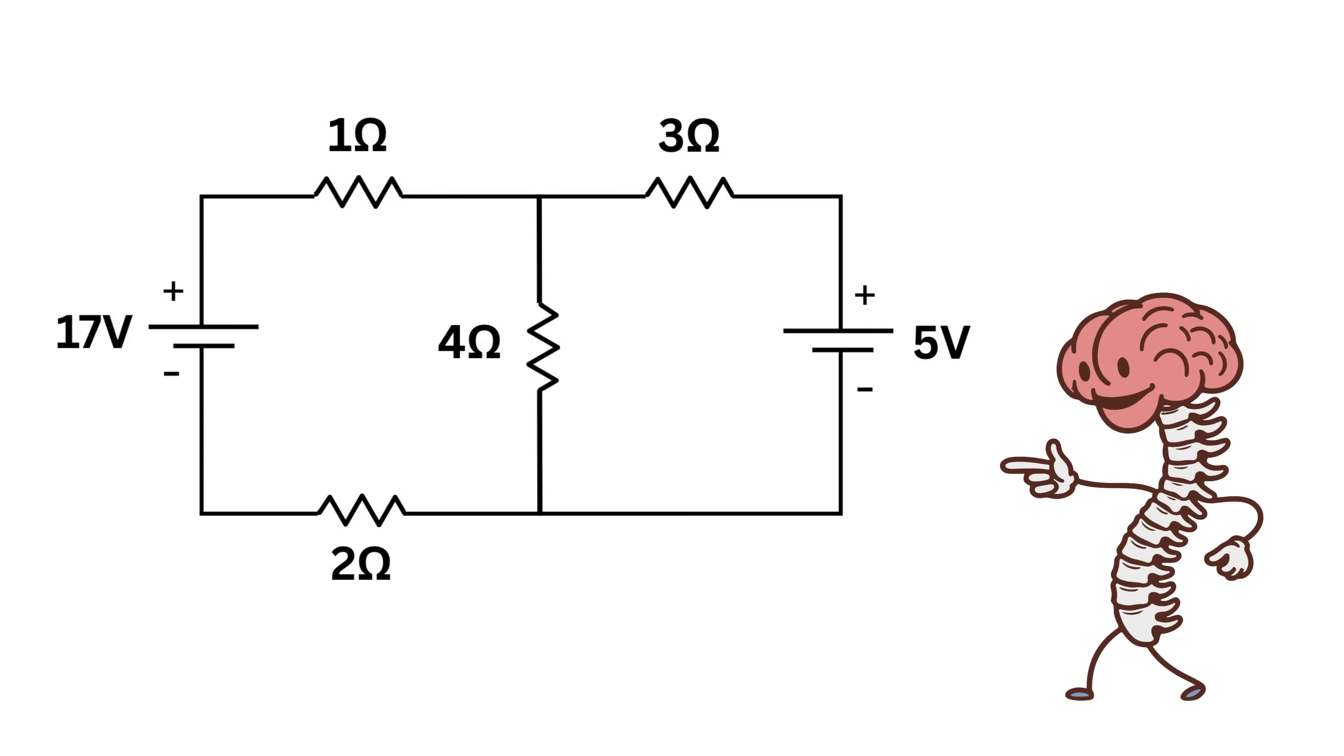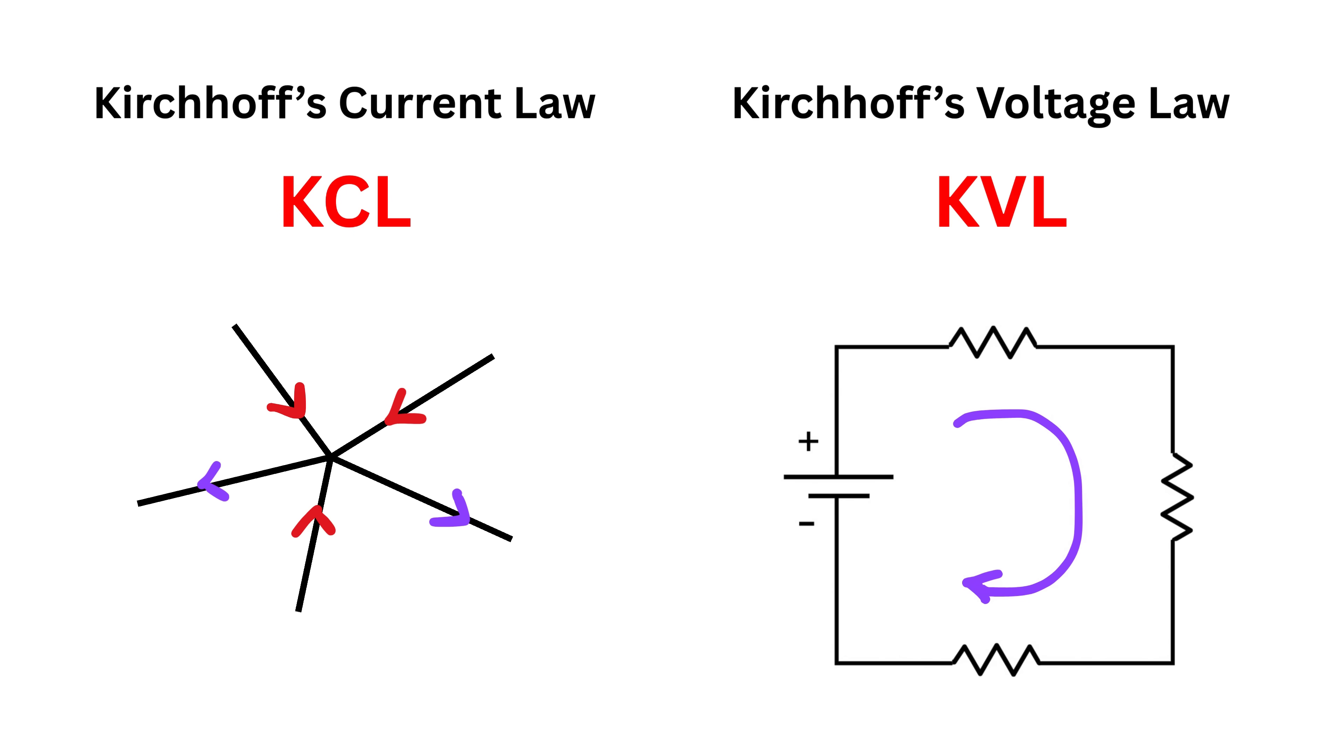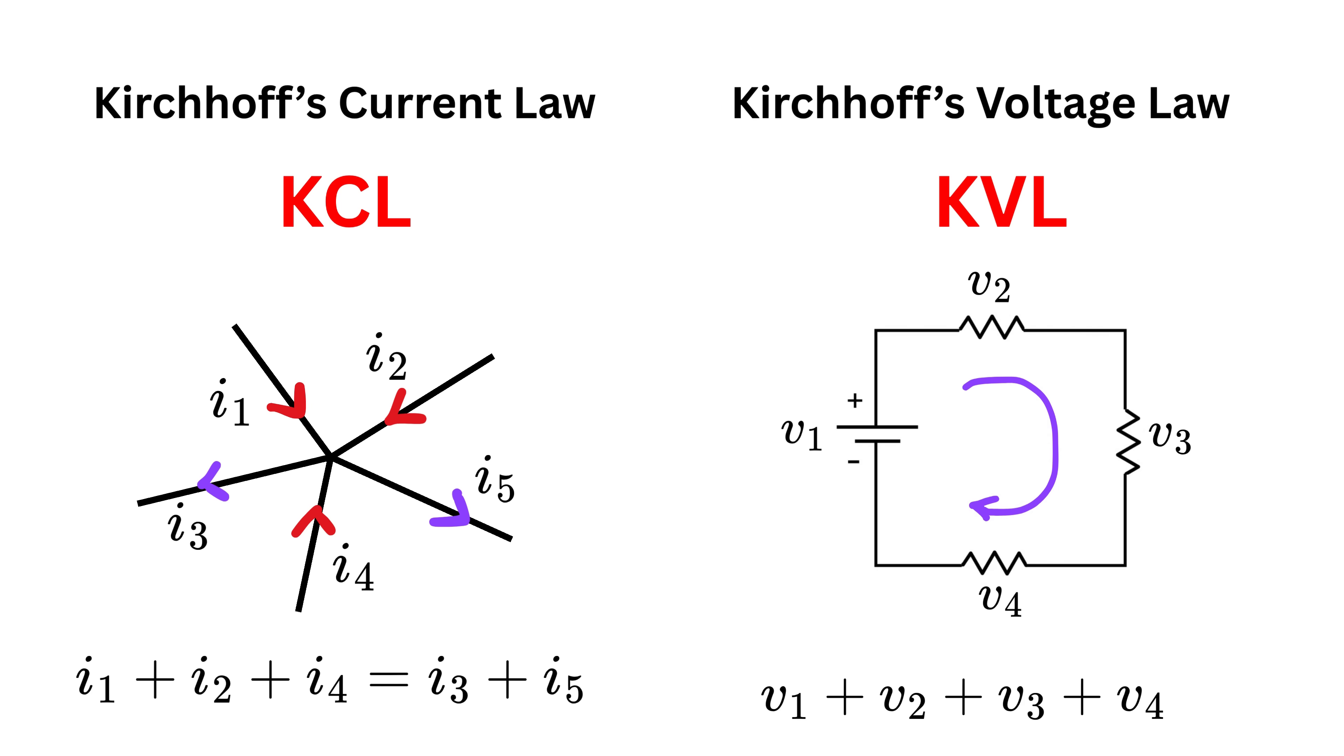Two laws that are fundamental and form the backbone of circuit analysis in this universe are Kirchhoff's Current Law or KCL, which we also call the junction rule, and Kirchhoff's Voltage Law or KVL, which we also call the loop rule. KCL says that the total current entering a junction or a node is equal to the total current leaving it because charge cannot appear or disappear at a junction. And KVL says that the sum of all voltages around any closed loop in a circuit is zero because energy is conserved.